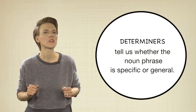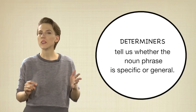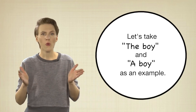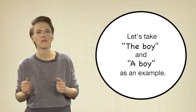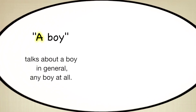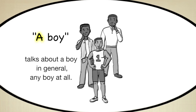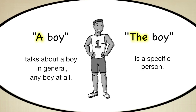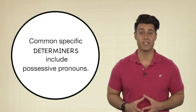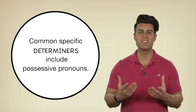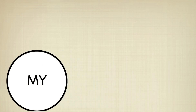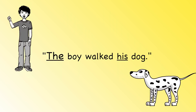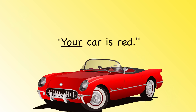Determiners tell us whether the noun phrase is specific or general. Let's take "the boy" and "a boy" as an example. "A" in "a boy" talks about a boy in general — any boy at all — while "the boy" is a specific person. Common specific determiners include possessive pronouns. For example: "The boy walked his dog." "Your car is red."